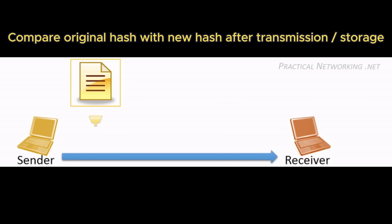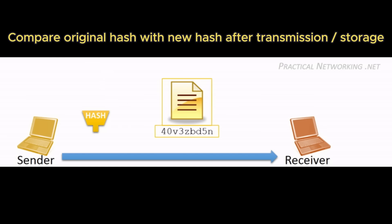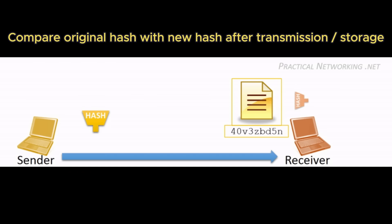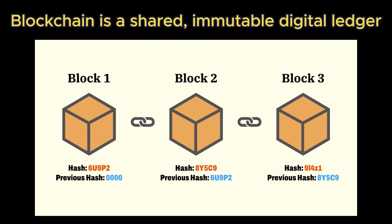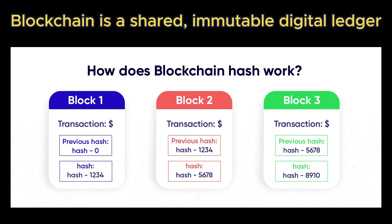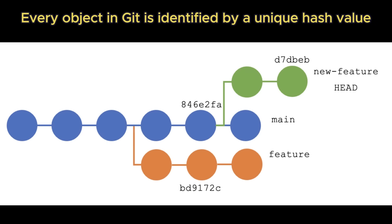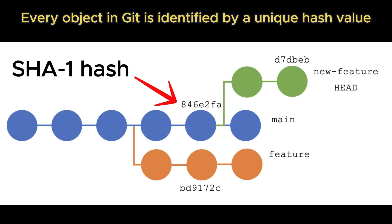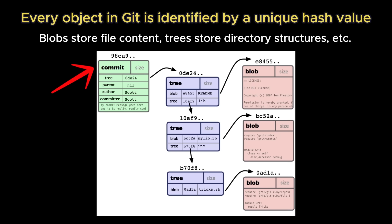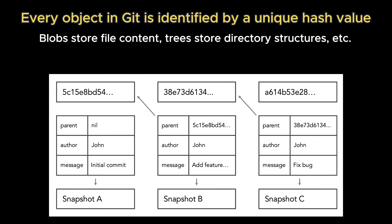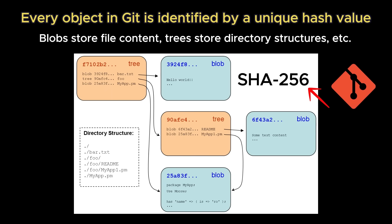In data integrity, hashes allow us to detect tampering. If you download a file and its hash doesn't match the expected value, the file has been altered. Blockchains create a tamper-proof ledger by including the hash of the previous block's header within each new block, forming a cryptographic chain where any past modification would invalidate all subsequent blocks. In version control systems like Git, each commit is identified by a SHA-1 hash calculated not just from the code changes but from a commit object containing metadata and the hashes of the parent commits, guaranteeing the integrity of the entire project history. I'll touch on the increasing vulnerabilities of SHA-1 due to collision attacks later, which is why Git is transitioning to SHA-256.